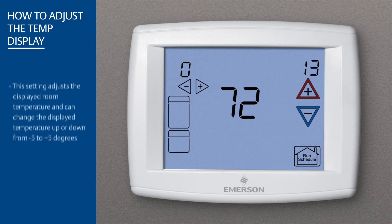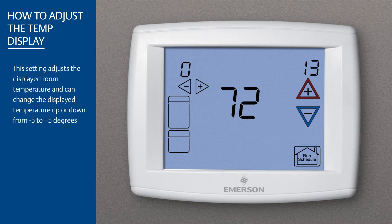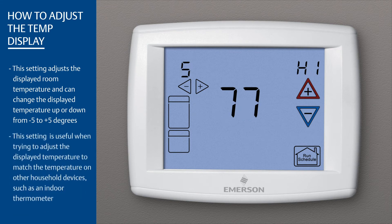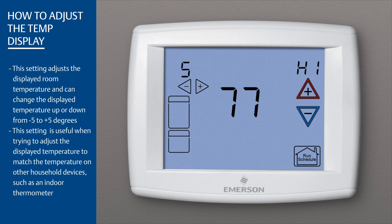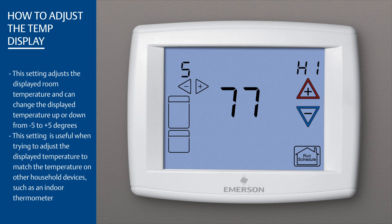This setting adjusts the displayed room temperature and can change the displayed temperature up or down from minus five to plus five degrees. This setting is useful when trying to adjust the displayed temperature to match the temperature on other household devices, such as an indoor thermometer.